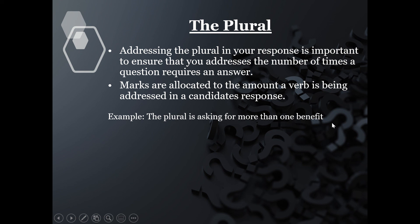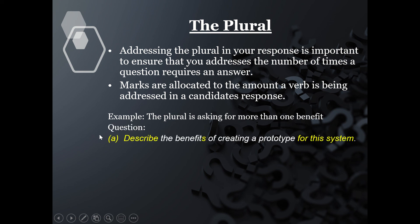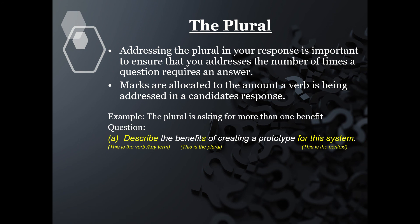In this example, the plural is asking for more than one benefit. Looking at the same question: the verb is 'describe,' the plural is 'the benefits' — more than one benefit — of creating a prototype for this system. You can see that this is the verb, this is the plural, and this is the context. If you address all three, you are in a good position to answer the question correctly.